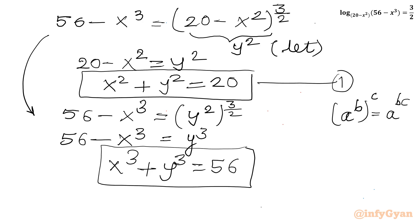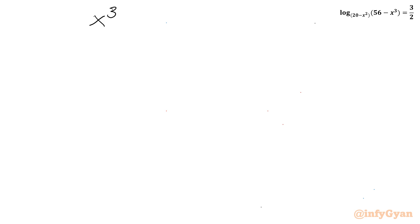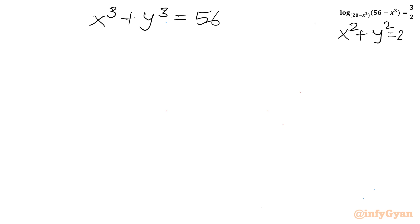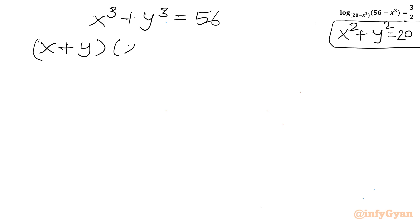Now we have a system: x³ + y³ = 56 and x² + y² = 20. Applying the sum of cubes formula: (x + y)(x² + y² - xy) = 56, and since x² + y² = 20, this gives (x + y)(20 - xy) = 56.